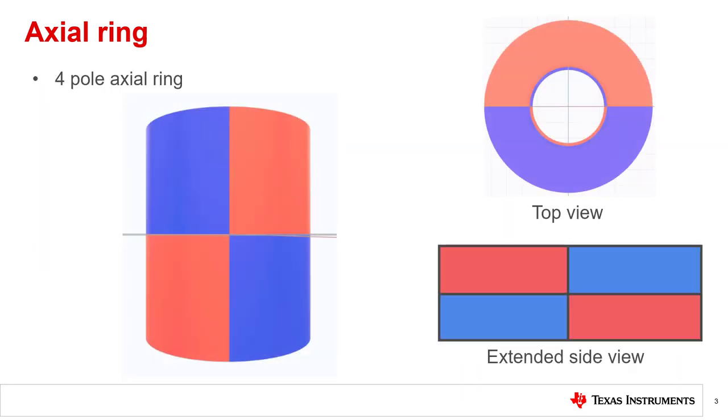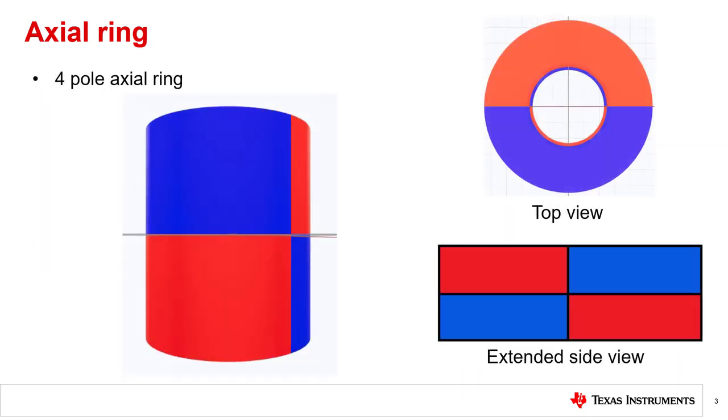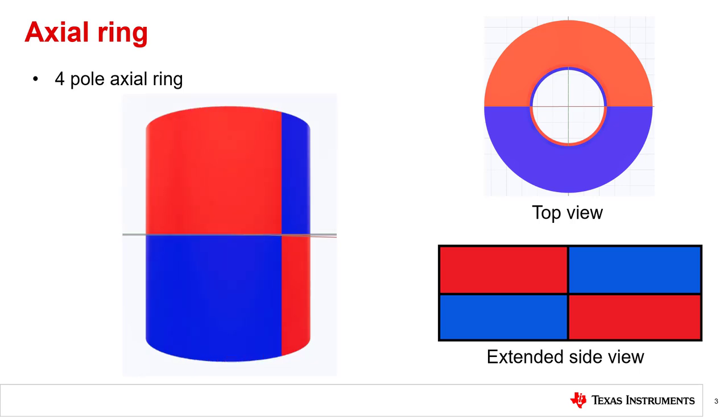Let's take a four pole axial ring magnet for example. When viewed from the outer round portion of the magnet we can see that there are four poles, but when observing from the top where the flat circular faces are located, only half of the magnet's total number of poles will be viewable. For a four pole axial ring we can see only two poles.